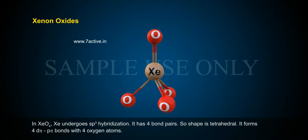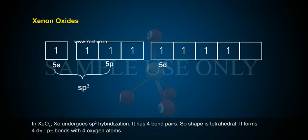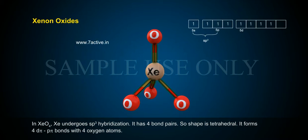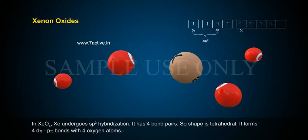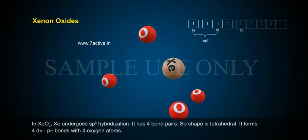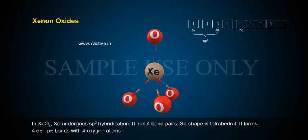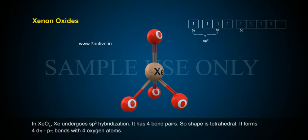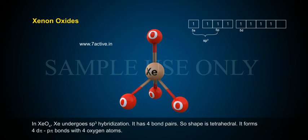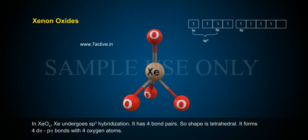In XeO4, Xe undergoes sp3 hybridization. It has four bond pairs, so the shape is tetrahedral. It forms four dπ–pπ bonds with four oxygen atoms.